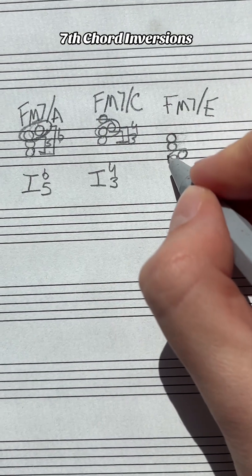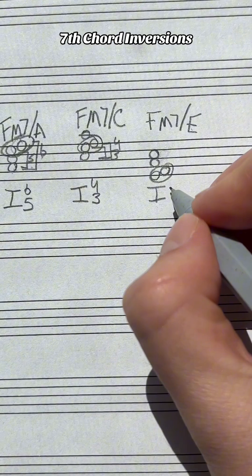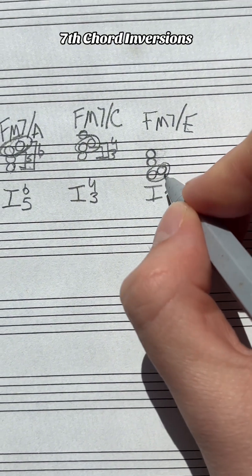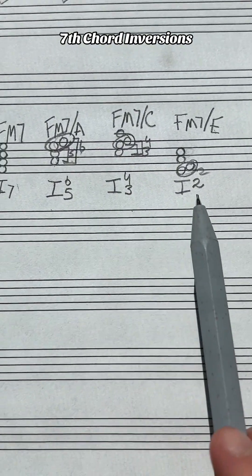And here, our tonic and seventh is right at the bottom because we're in third inversion, so we just need to write a two because that's interval of a second. So we have 7-6-5-4-3-2.